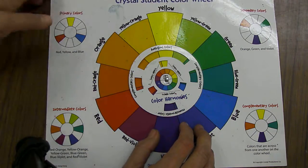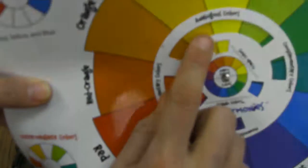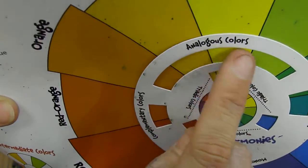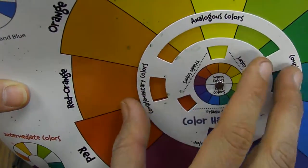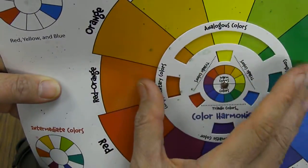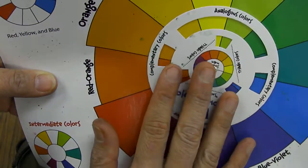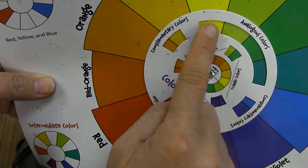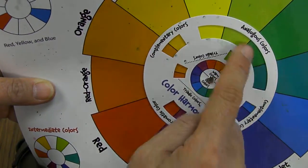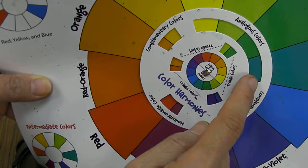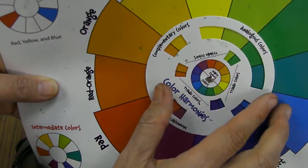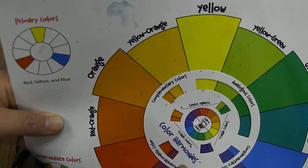One is analogous. So analogous is right here, and there's a center wheel on the color wheel, and you can spin it around. Any of the colors that are touching—it gives you four options, but you just want three colors touching each other. That makes an analogous set.